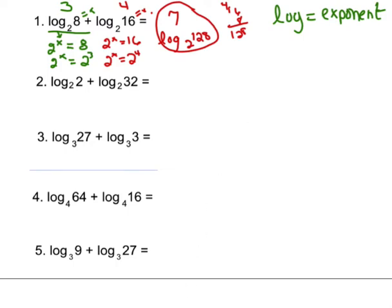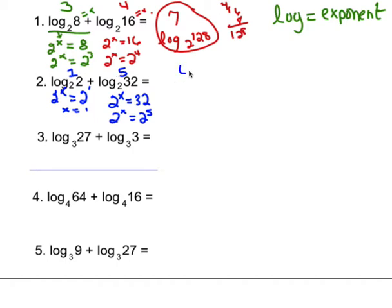This is a little shortcut. Log₂2 — think of that as 2 to the what equals 2 to the first — so x equals 1. Then 2 to the what equals 32: rewriting with the same base, 2 to the x equals 2 to the fifth, so that's 5. 1 plus 5 equals 6, which is the same thing as log₂64, because 2 times 32 is 64 — so 2 to the sixth power equals 64.